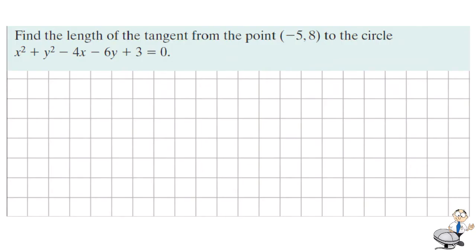Find the length of tangents to a circle from a given point. So we have a point (-5, 8) and this circle here. We know that the center of this circle is (2, 3).